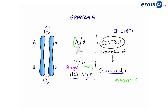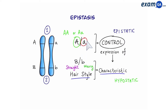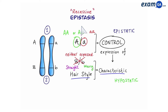Let's say in this case the dominant version of gene A — so either having two big A's, or a big A and small a — means that gene B can be expressed. However, the recessive version, meaning having two small A's, will prevent the expression of gene B. And this is how gene B gets controlled. Now in this case we have an example of recessive epistasis, because the recessive version of gene A — small a — will prevent, or cover, or mask gene B.